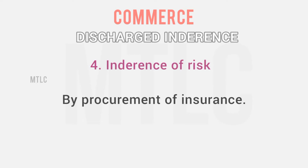The fourth is the hindrance of risk. If you have goods in storage or transportation, there is risk — from floods, earthquakes, or other events. This is called hindrance of risk. How do we minimize it? By insurance — by insuring the goods, insuring the vehicle, and insuring the people, we can minimize this risk.